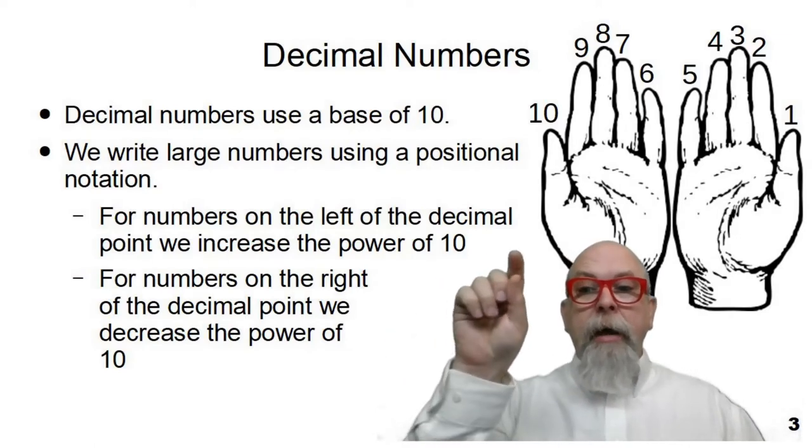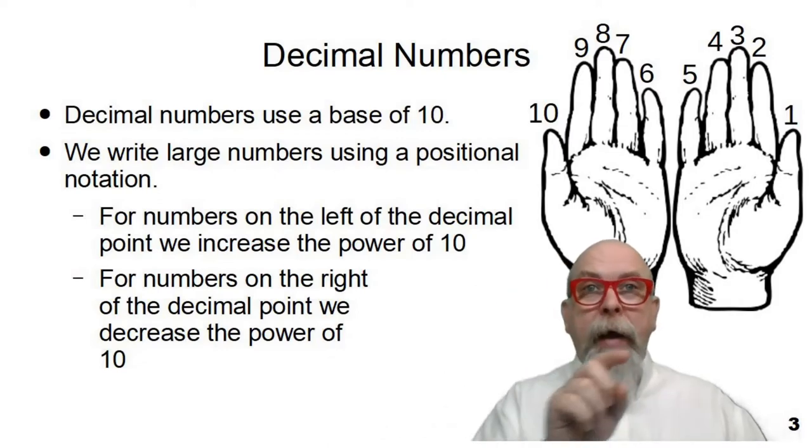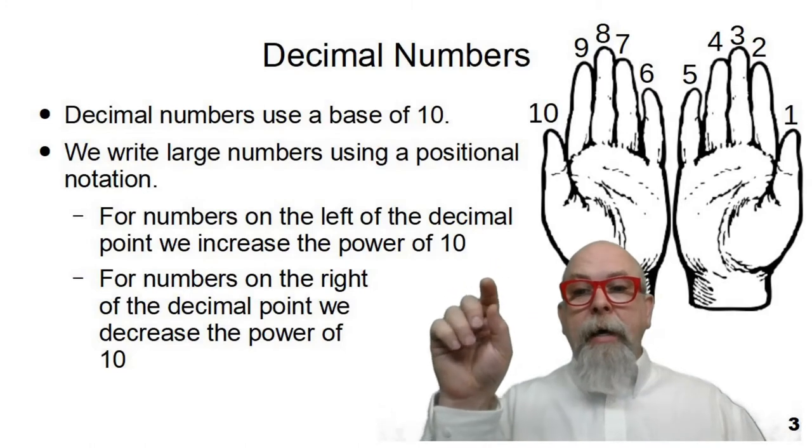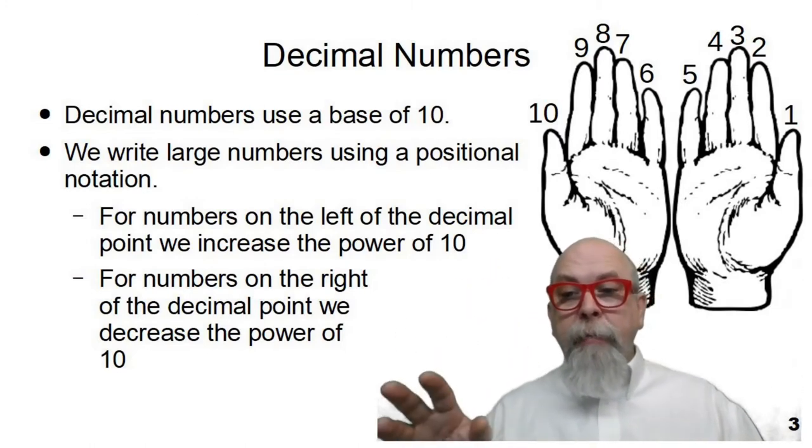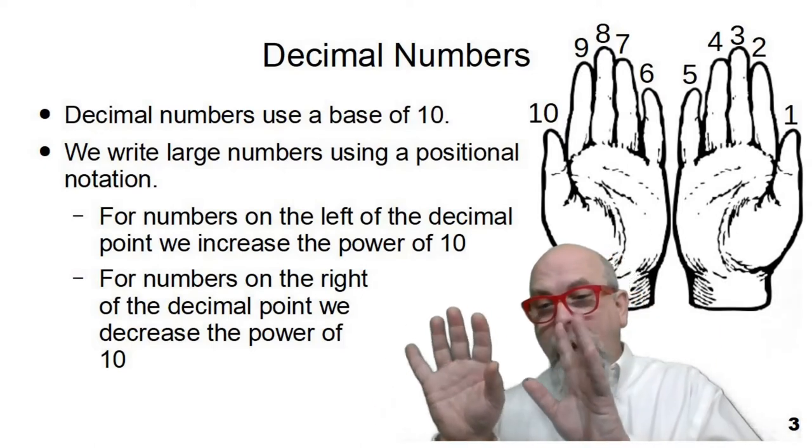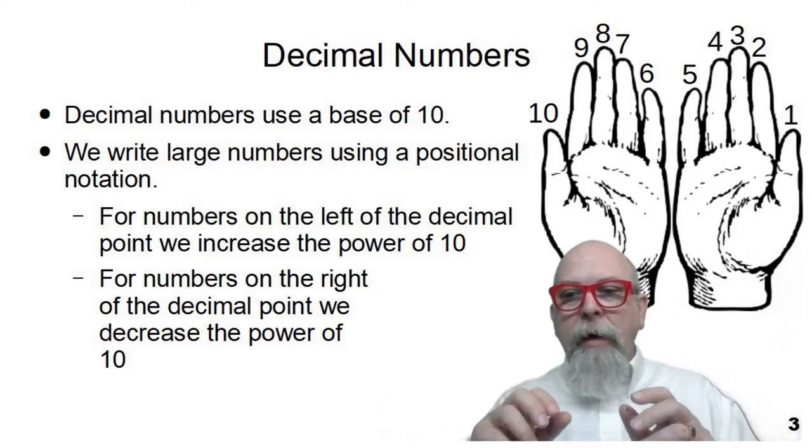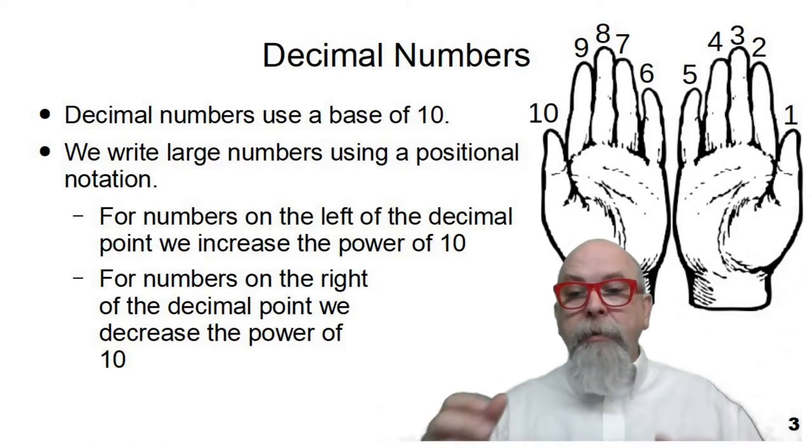And as we move to the left, the power of 10 increases. But that's the way we write decimal numbers. Decimal numbers were kind of created probably because we have 10 fingers, and that's why we like to count in groups of 10.